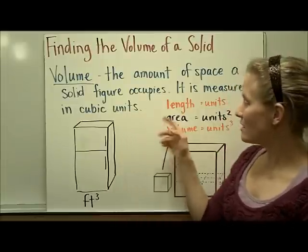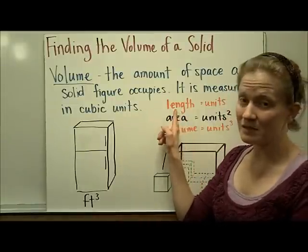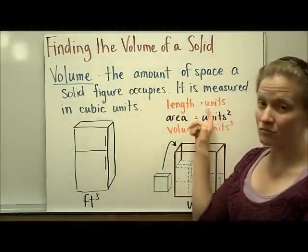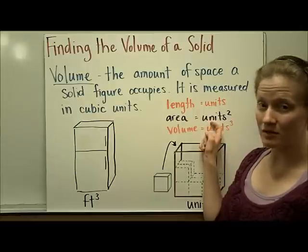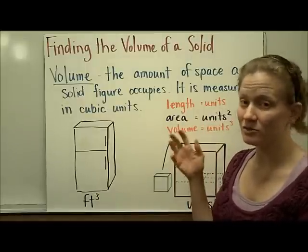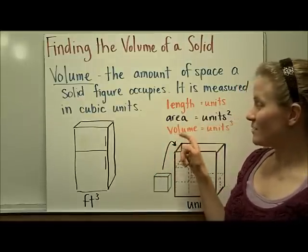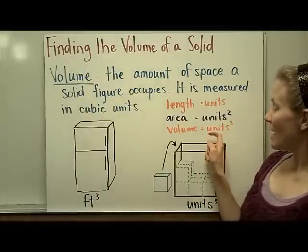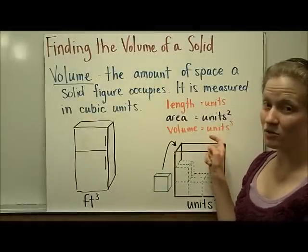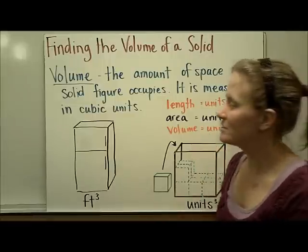I hope that you see the pattern here. We started with measurements of length measured in plain units like meters and centimeters. Area is measured in units squared, like feet squared or inches squared. Volume is measured in cubic units, which we show with a 3, like cubic centimeters or cubic feet.